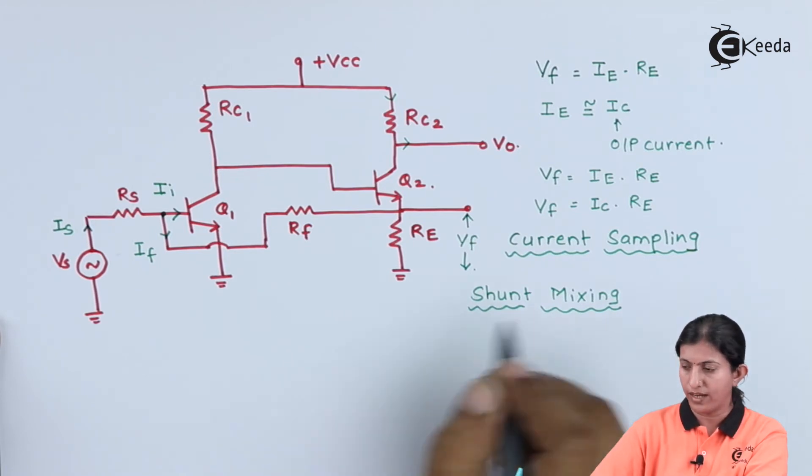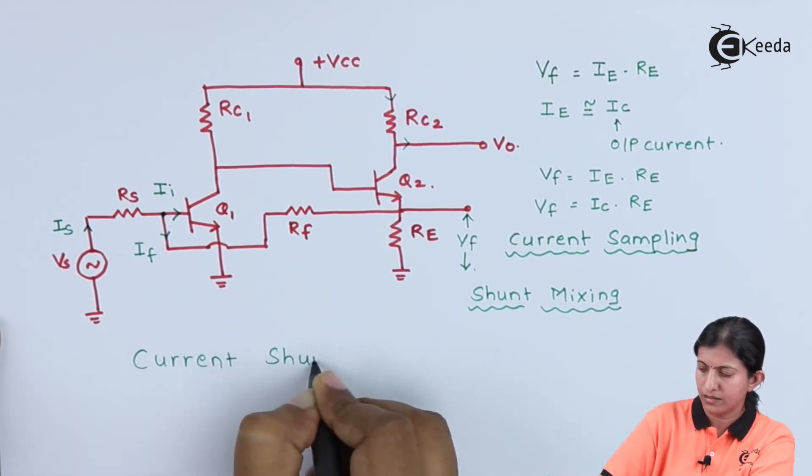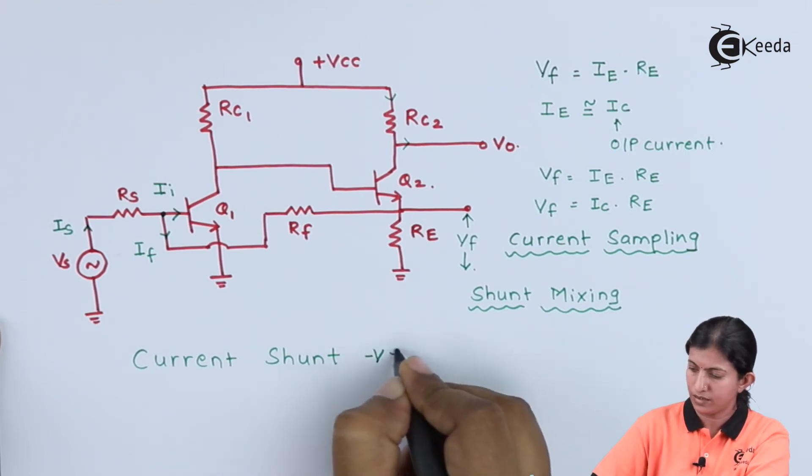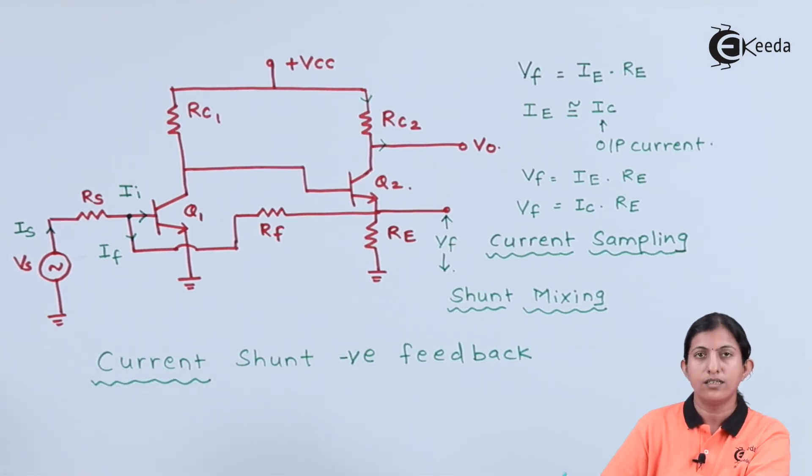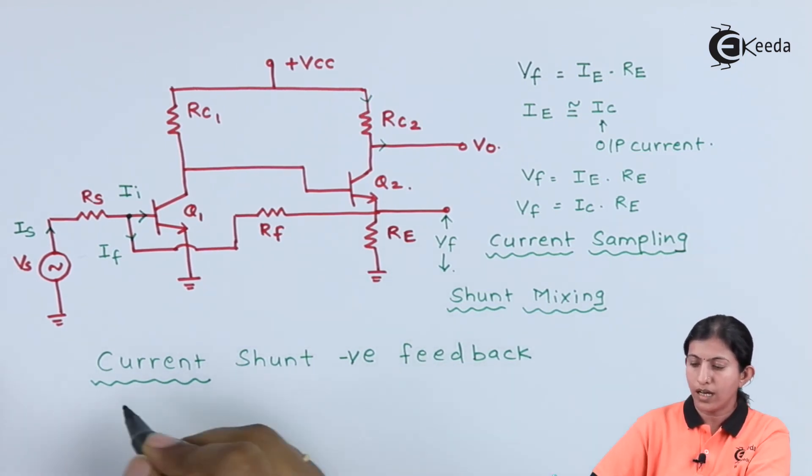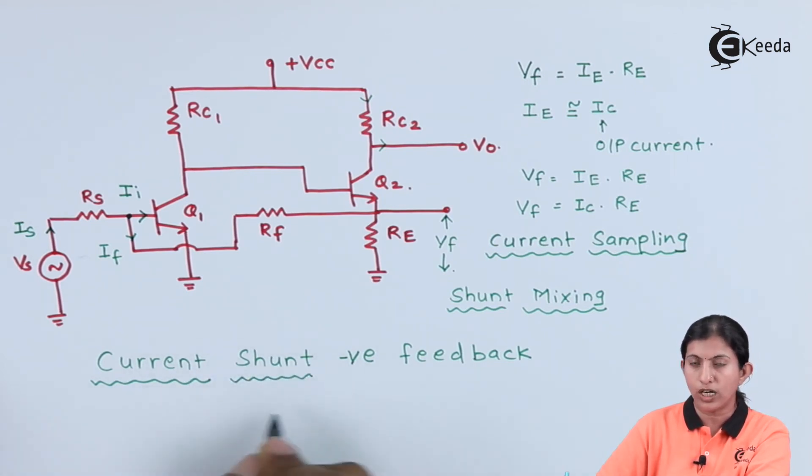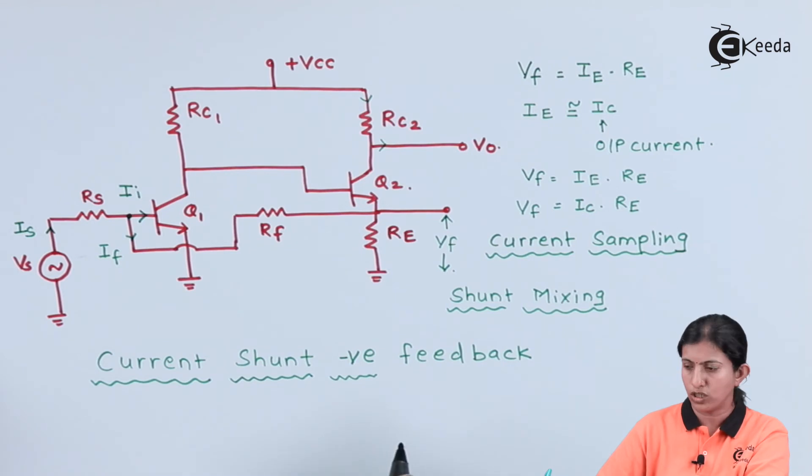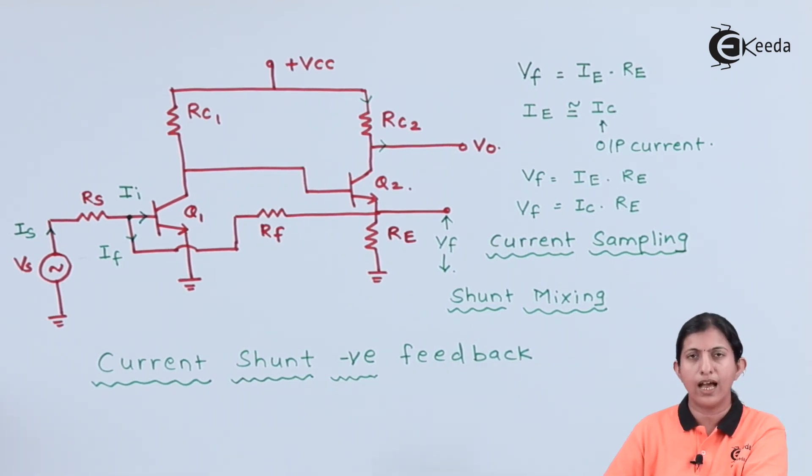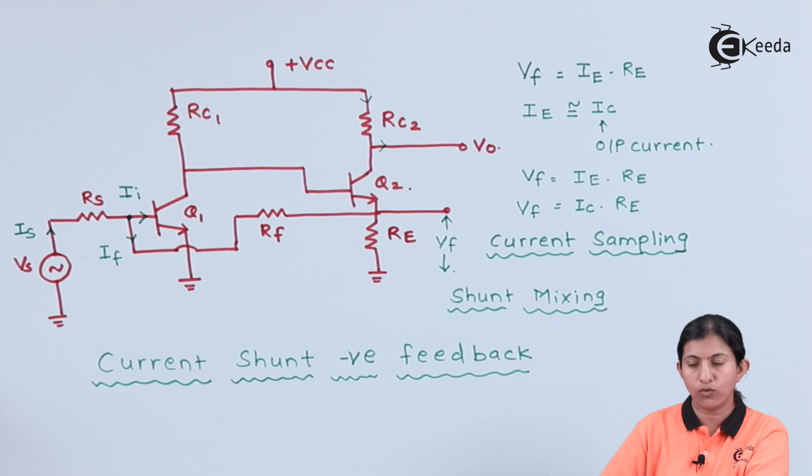The name of this amplifier is Current Shunt Negative Feedback. 'Current' indicates current sampling—the feedback voltage depends upon the current. As the input current divides into two parts, it is shunt mixing. The input and feedback are in series opposition and out of phase, hence this is negative feedback. This is all about Current Shunt Negative Feedback.